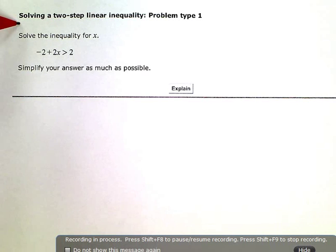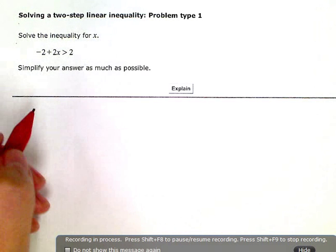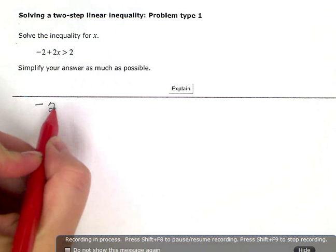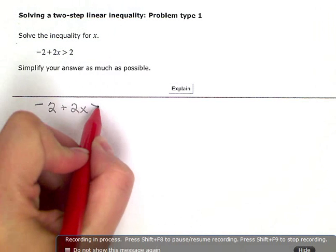Solving a two-step linear inequality, problem type 1. Solve the inequality for x. I'm going to rewrite the inequality here. I have negative 2 plus 2x is greater than 2.